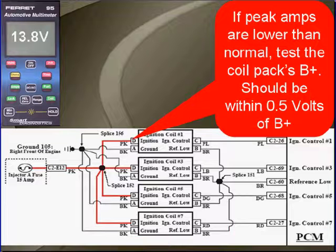If peak amps are lower than normal, test the coil pack's B+. It should be within a half volt of system voltage B+.